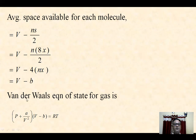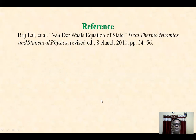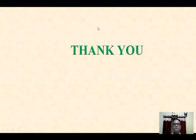So the Van der Waal equation of state for a gas is (P + a/V²)(V − b) = RT. Here P plus a upon V squared is the corrected pressure and V minus b is the corrected volume. Thank you.